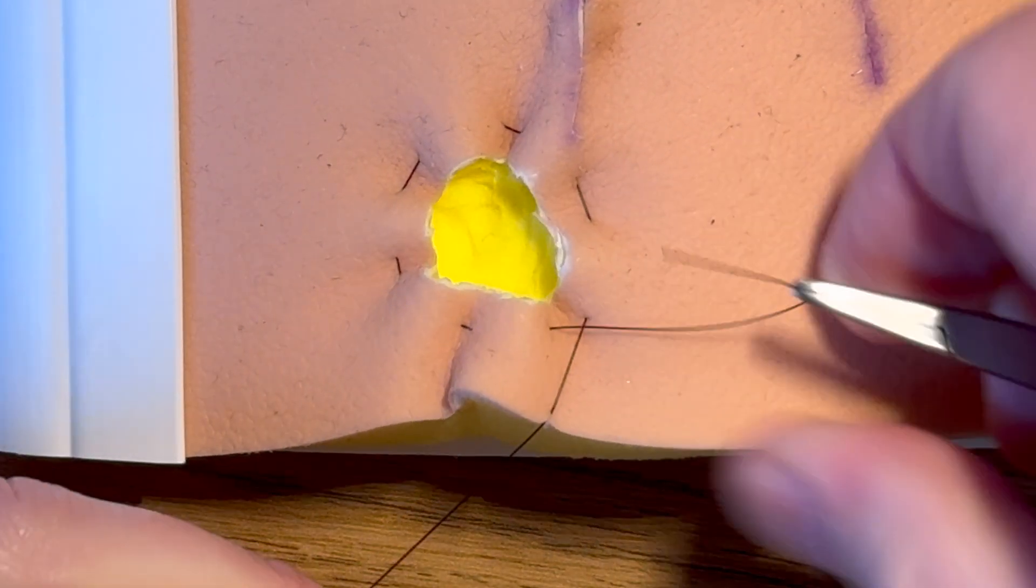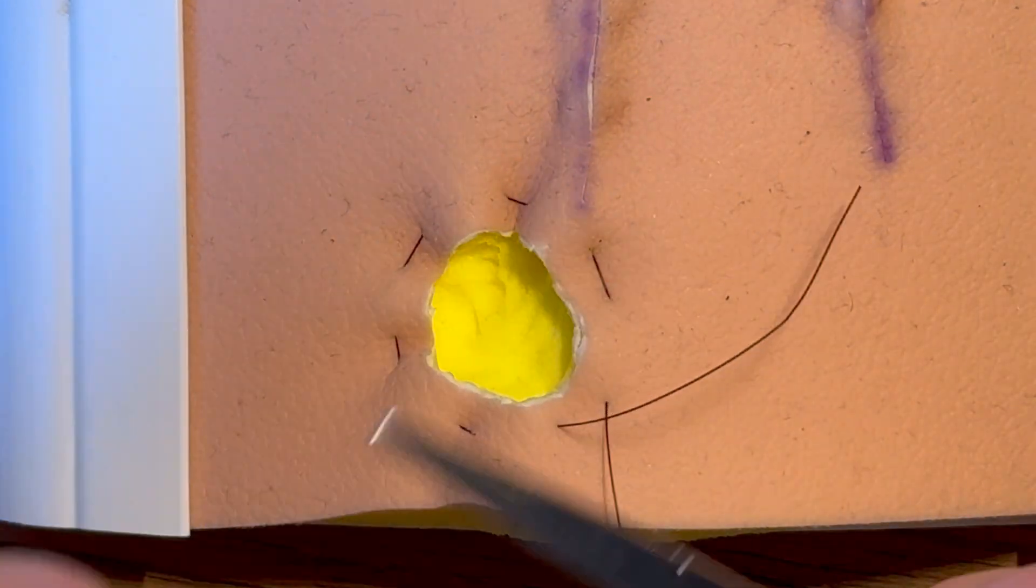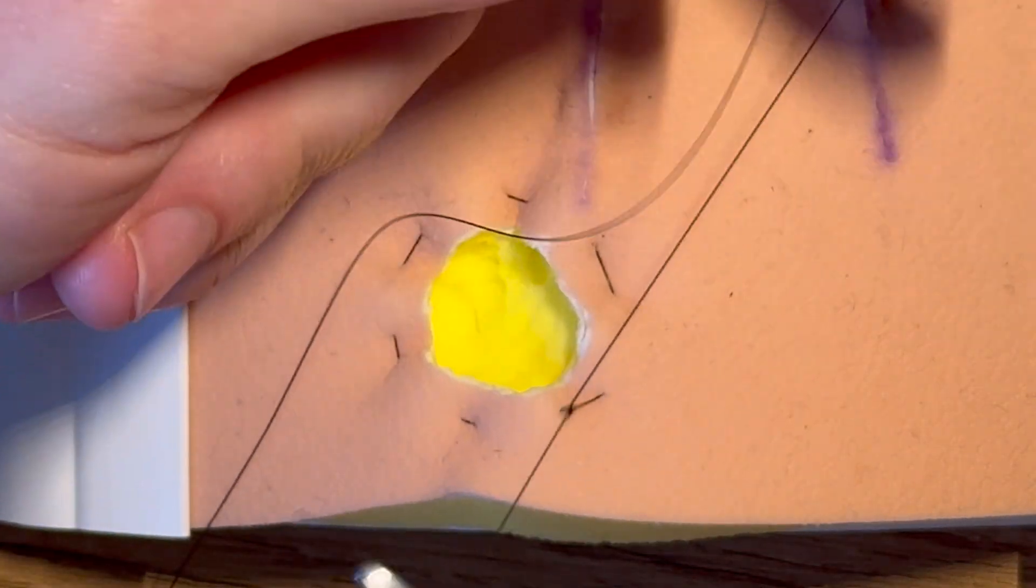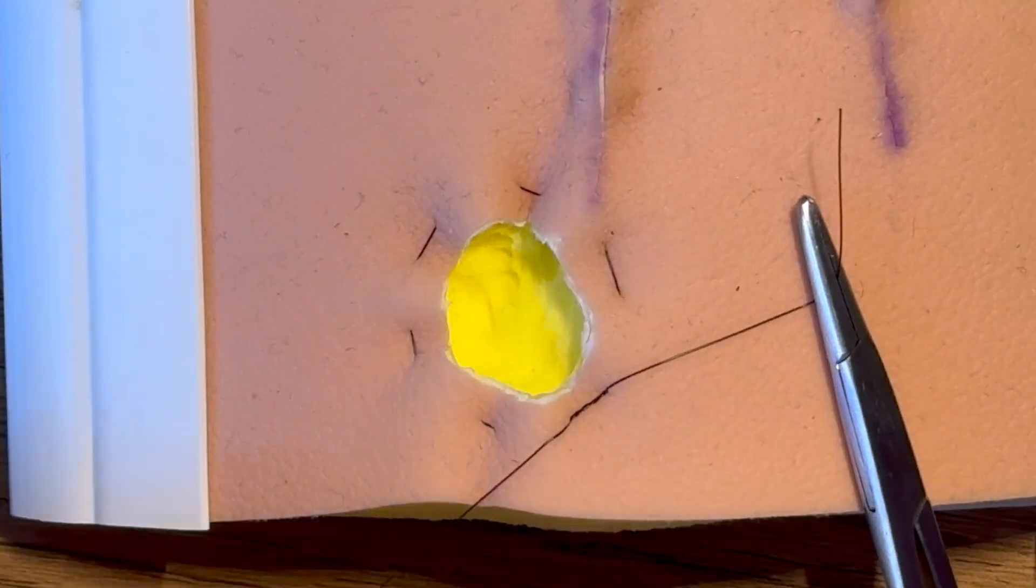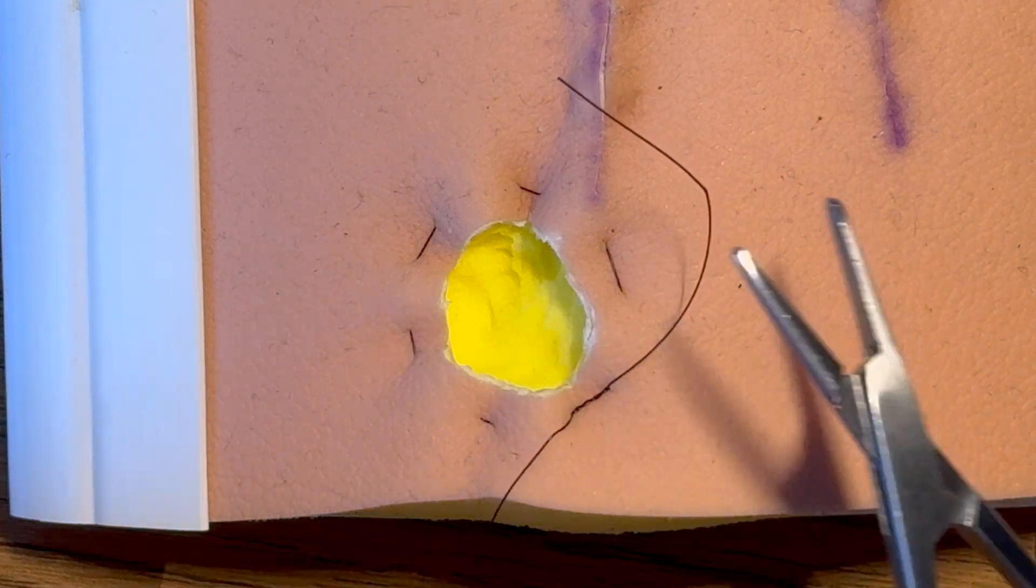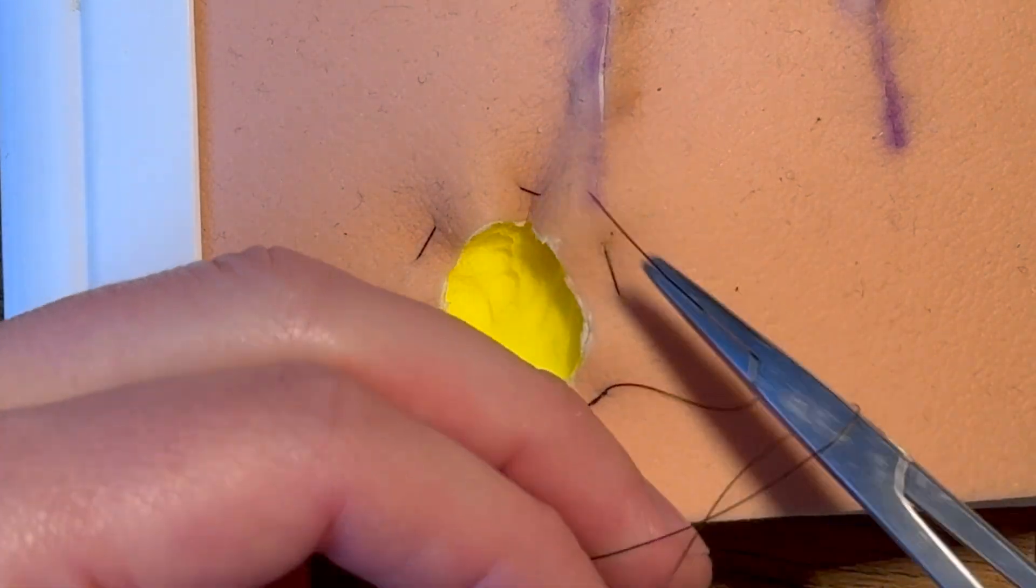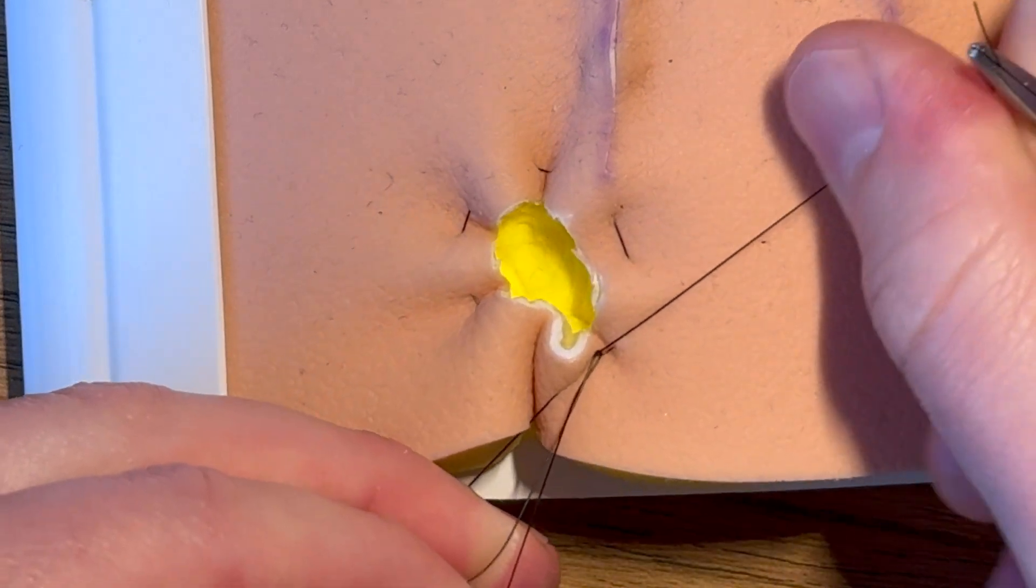So we're going to need to put a surgeon's knot, well we're going to put the first two throws of a surgeon's knot in like that just to hold the knot in place. And then because it's under tension it's going to slip, we're going to need to do something like this just to hold it in position.